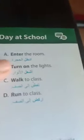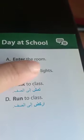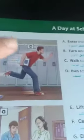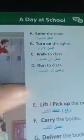You will find the label for A, which is 'enter the room,' showing what they are doing. D is 'run to class.' It has both Arabic and English labels.